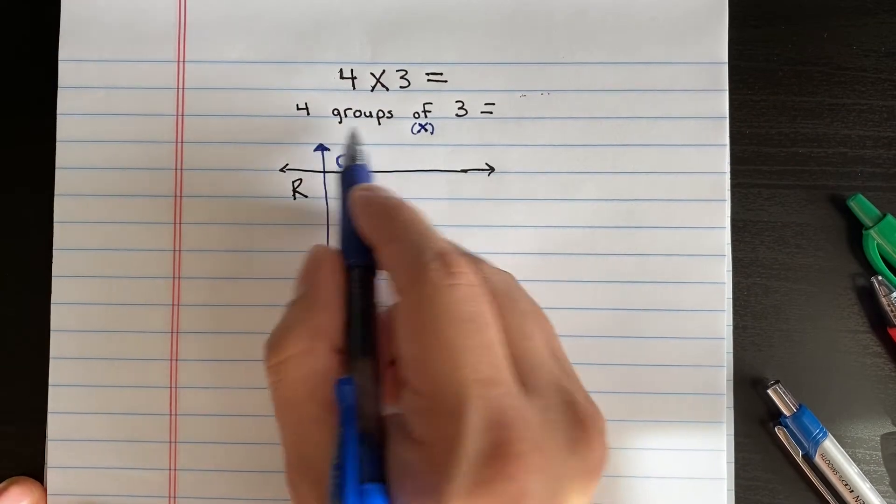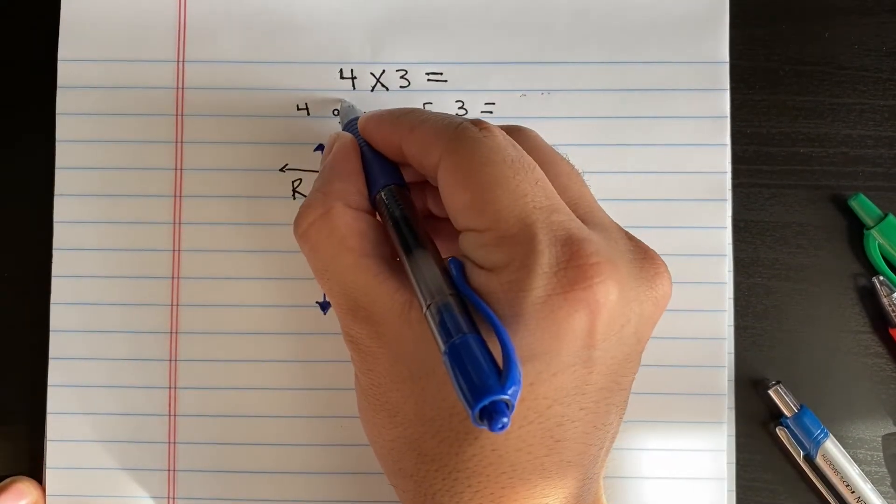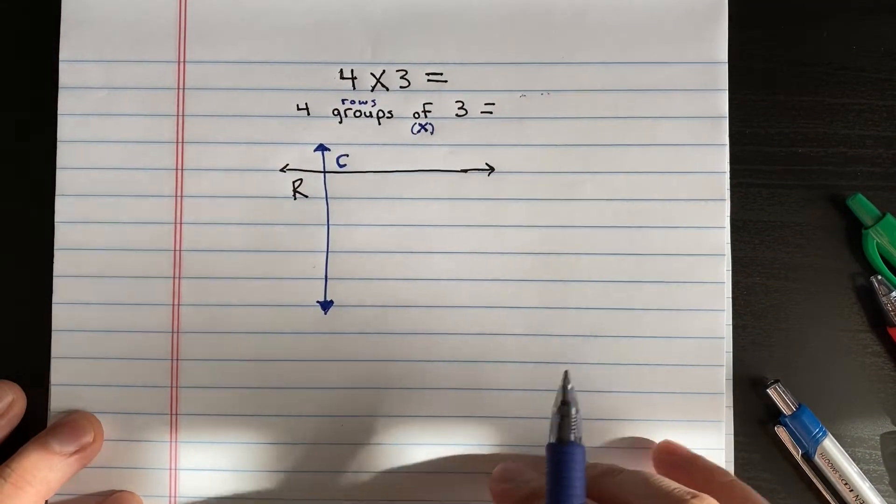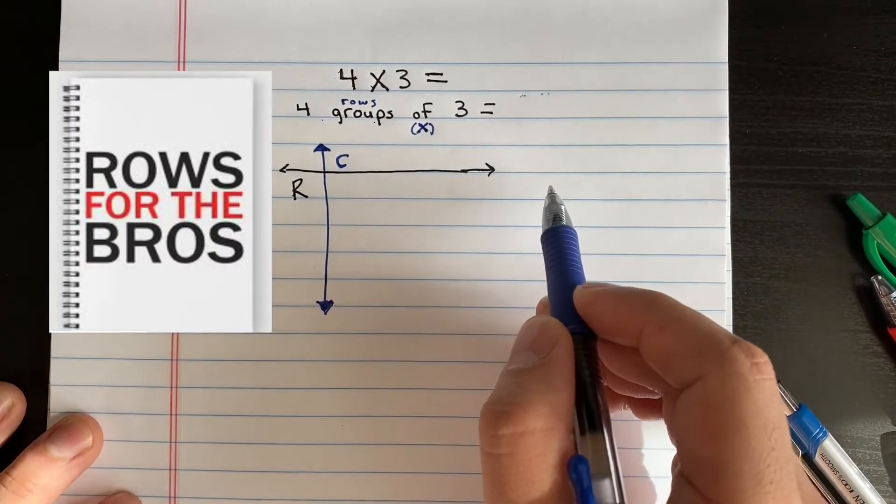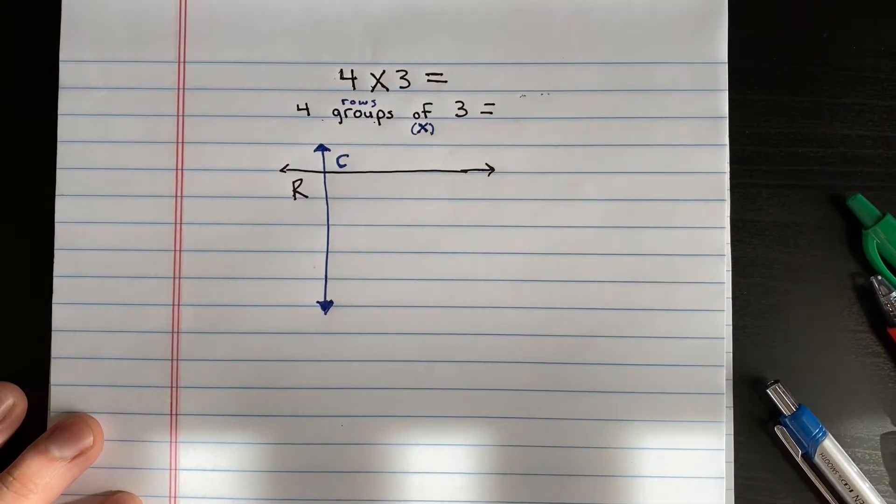And when you see the word groups, okay, we can make four groups, or we could just turn it into rows. Okay, I'm going to put rows on here. So that way, it kind of makes more sense to me now. I see four rows of three. So I'm going to make four rows, and I'm going to put three in each row. So let's go ahead and do that right now.